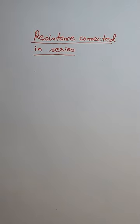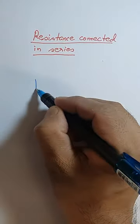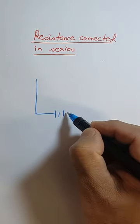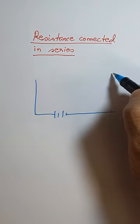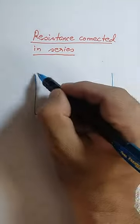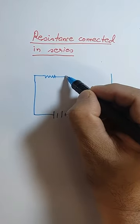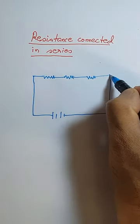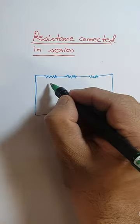Resistance connected in series. Now we take three resistors which are connected in series. So as you can see, this is the circuit diagram. Now consider these are three resistances which are connected in series.